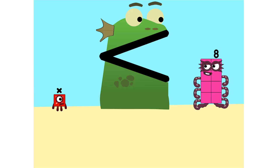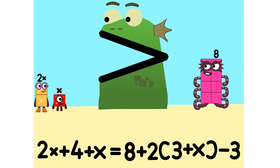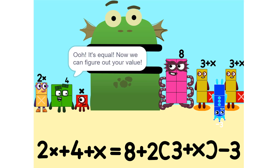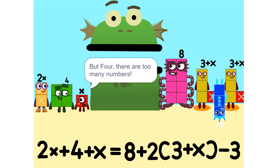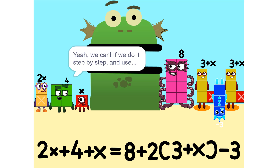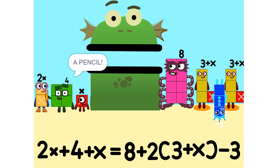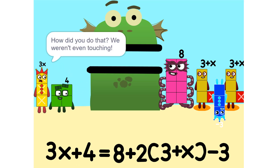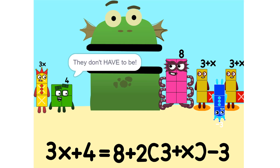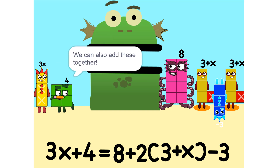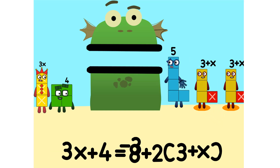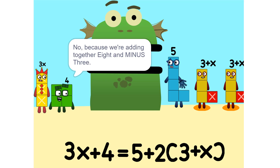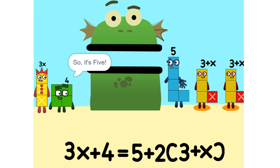So we add some more. 2 times X equals 2X. Now we can figure out your value. But there are too many numbers. We'll never figure it out. Yeah, we can, if we do it step by step. And use a pencil. So let's get started. One thing we can do is add these two together. How did you do that? We weren't even touching. They don't have to be. Could we do it if we were touching? Yeah. We can also add these together. 5. Wouldn't it be 11 since 8 plus 3 is 11? No. Because we're adding together 8 and minus 3, or negative 3. So it's 5. Oh.